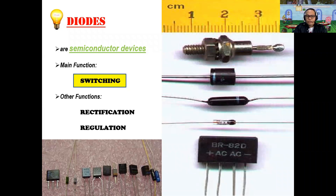Their main functions are typically switching. Their other function is rectification — converting an AC signal into a usable DC signal. Circuits capable of rectification are called rectifiers. Diodes are also capable of regulation, specifically voltage regulation. The diodes specifically capable of voltage regulation are called Zener diodes.